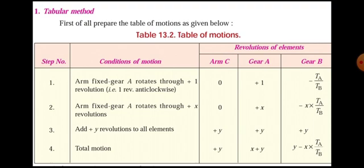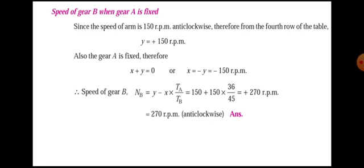Since gear A rotates one revolution in the anti-clockwise direction, we get plus one for gear A. Now we add the rows. The total motion row: for the arm it is plus y, for gear A it is x plus y, and for gear B it is y minus x multiplied by Ta over Tb. These are the total motion expressions in the table.